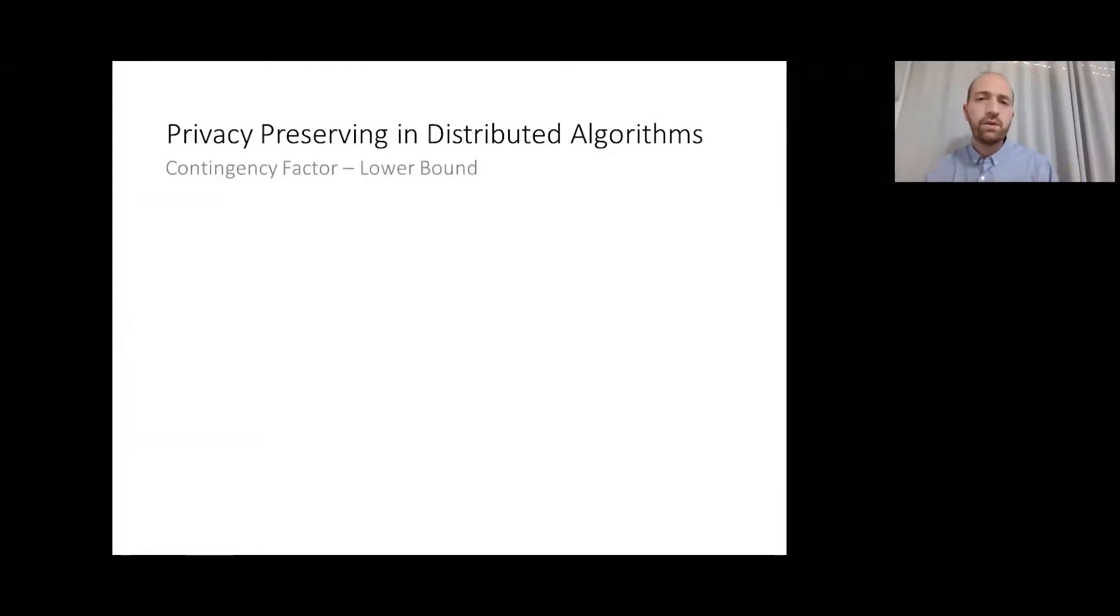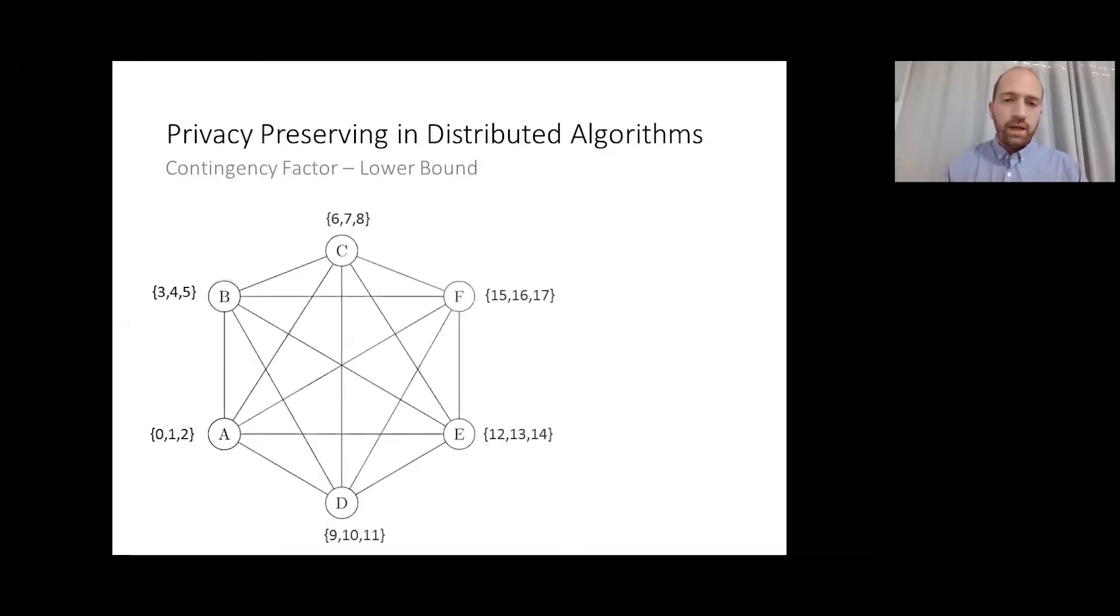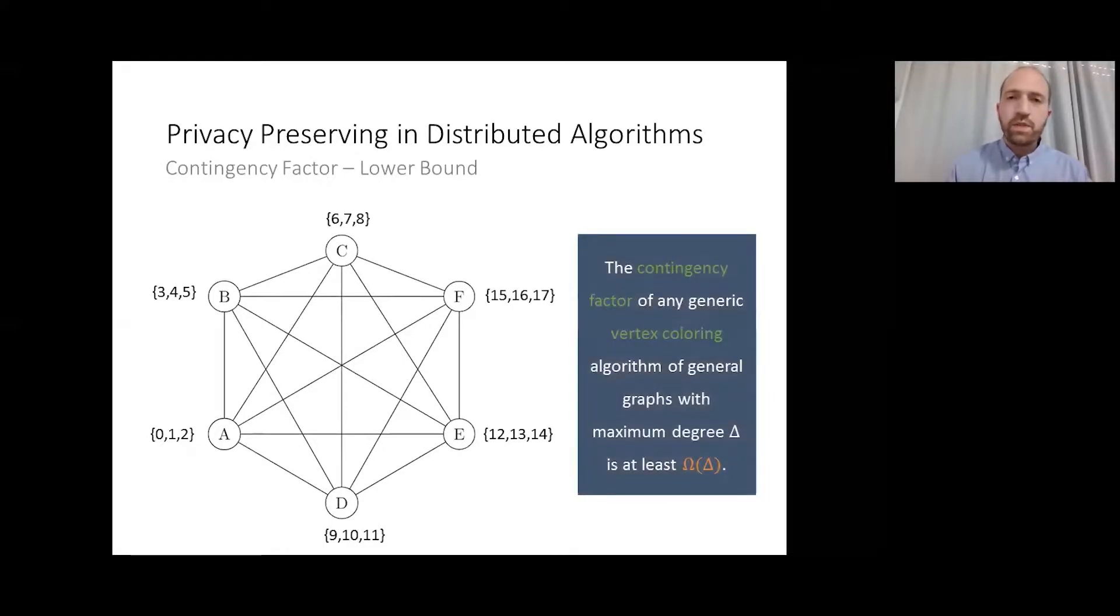What is the lower amount of contingency factor for graph coloring of general graphs? Let's imagine a complete graph such that each node holds a set of, let's say, three distinct colors. With each node we add to the complete graph, we must add three new colors, increasing the problem domain by three, while keeping the size of the solution domain just the same. Hence, the contingency factor is dictated by the size of the clique, which is delta.